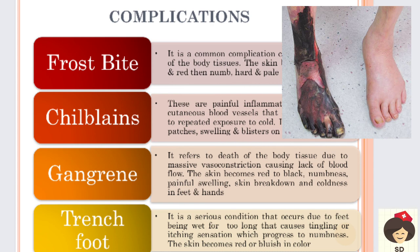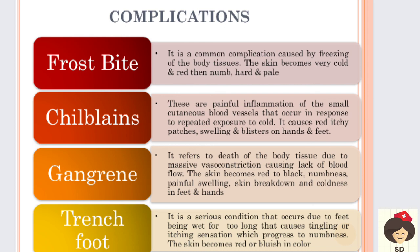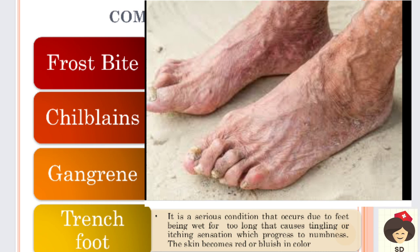Next is gangrene - death of body tissue. The extremities, mainly fingers and toes, show black tissue formation due to massive vasoconstriction and lack of blood flow to the tissues. The extremities - feet and hands - become numb and change from red to black color, with painful swelling, skin breakdown, and coldness. These are signs of gangrene. Finally, trench foot - occurs when the foot is immersed in cold liquid for a long time, when the foot is always wet, like wearing very wet shoes or constantly exposed to cold wet conditions.